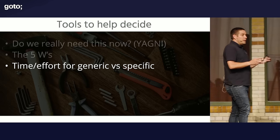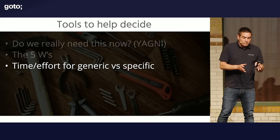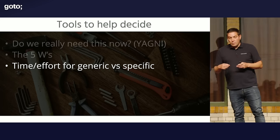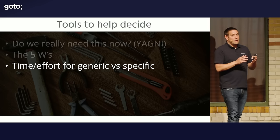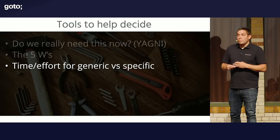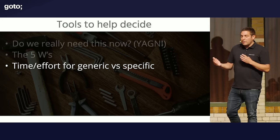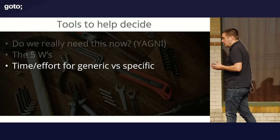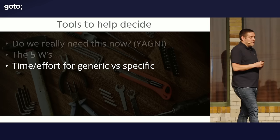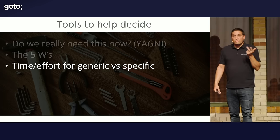Think about time and effort. If something is already there and I copy it, it takes one minute. If I want to make it generic, it takes a lot more time — but maybe the next use case takes less time. Do we know there will be a next use case? We don't know yet. Sometimes it can help building something generic because you're pretty sure you'll need it in 10 places — like logging, metrics, security, those cross-cutting concerns you have everywhere.